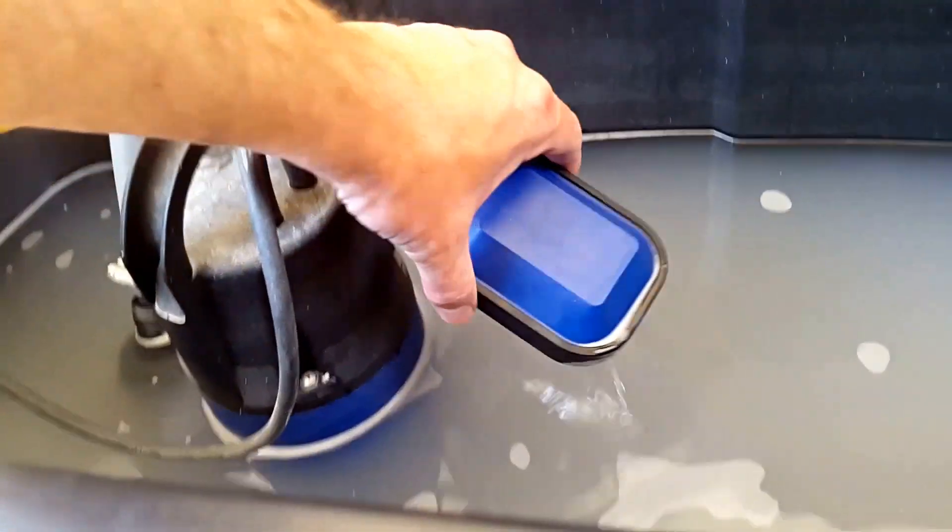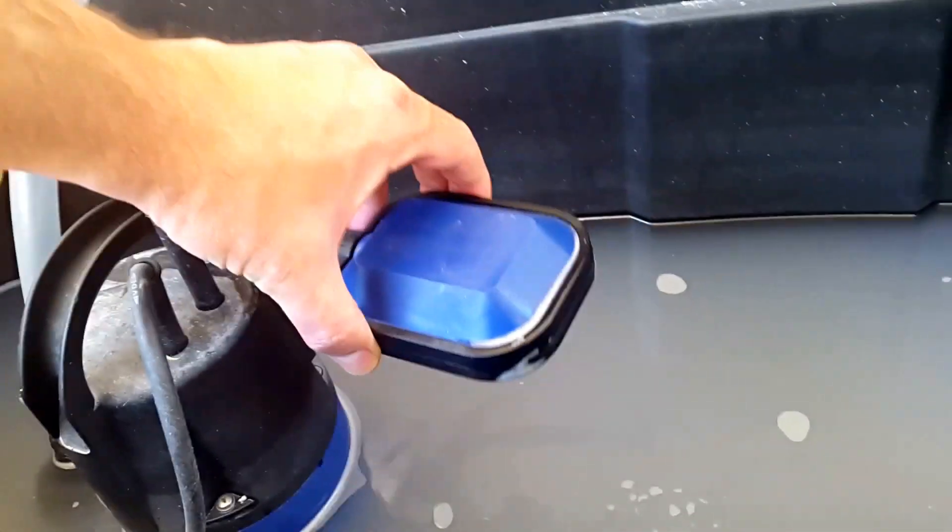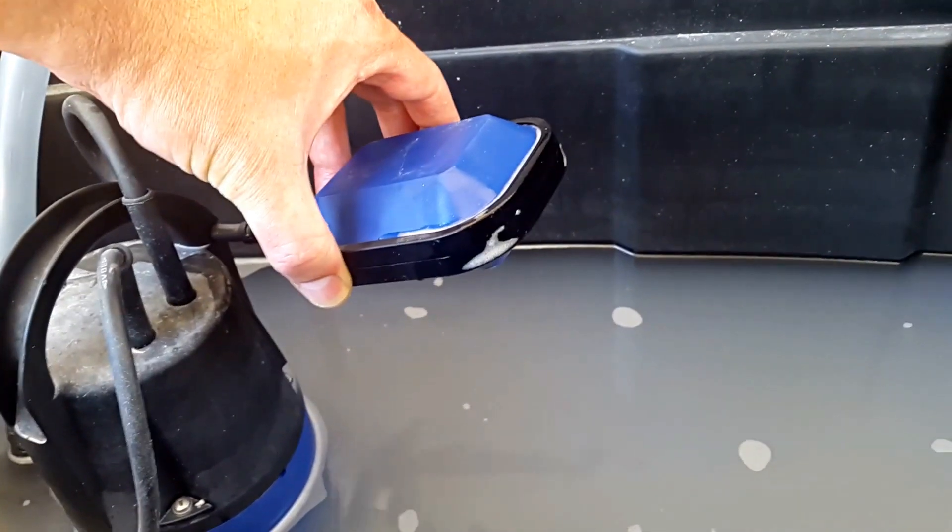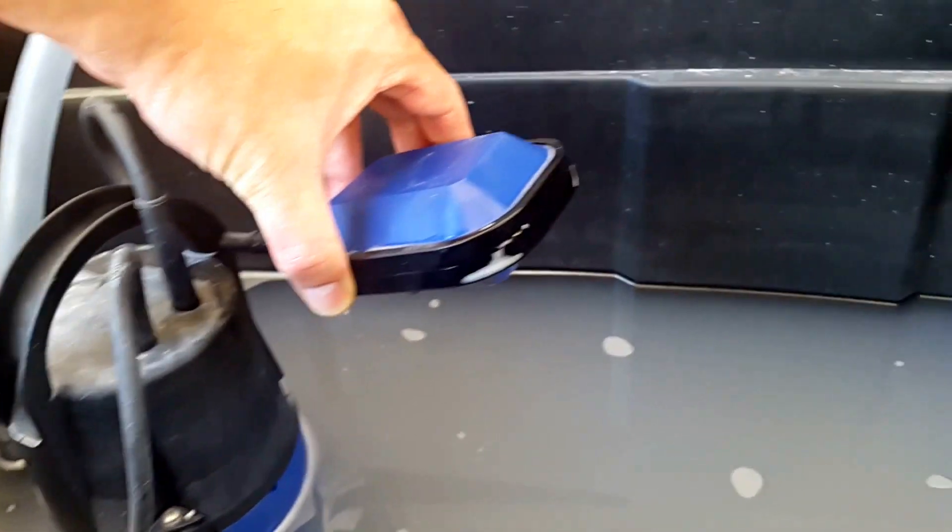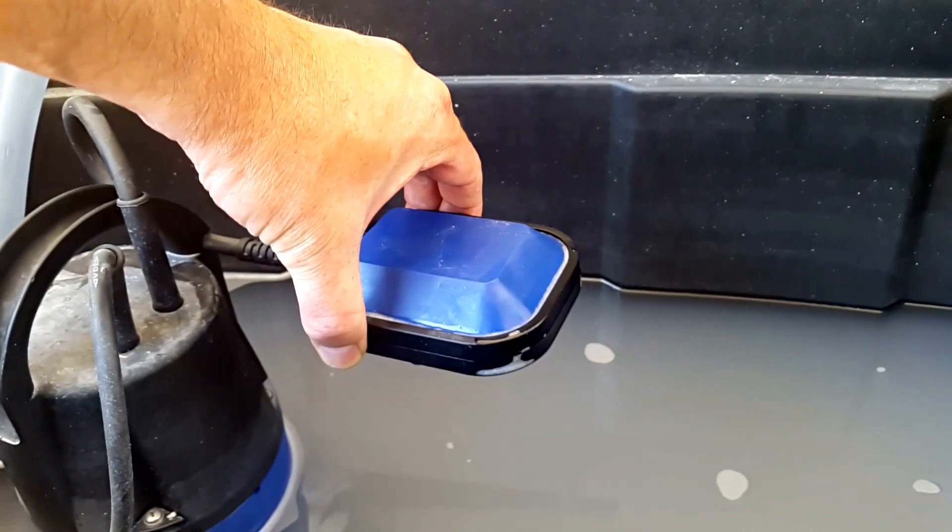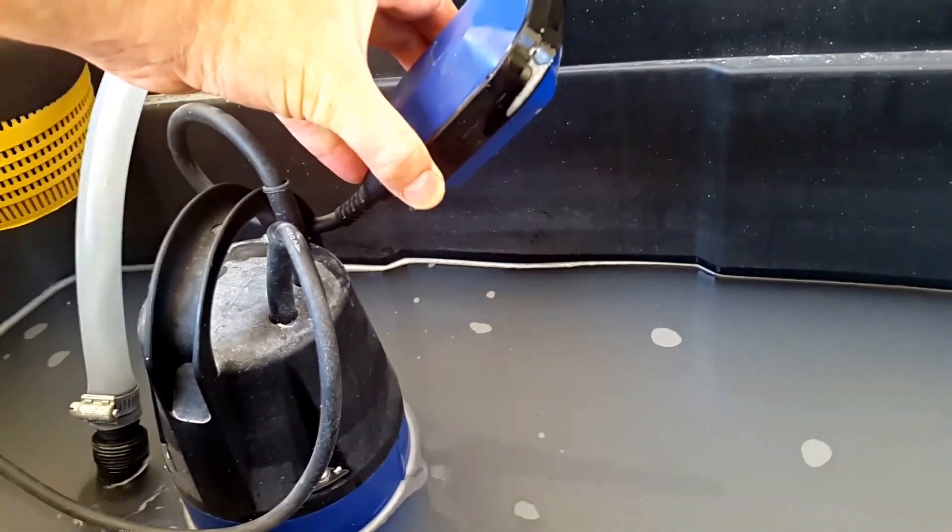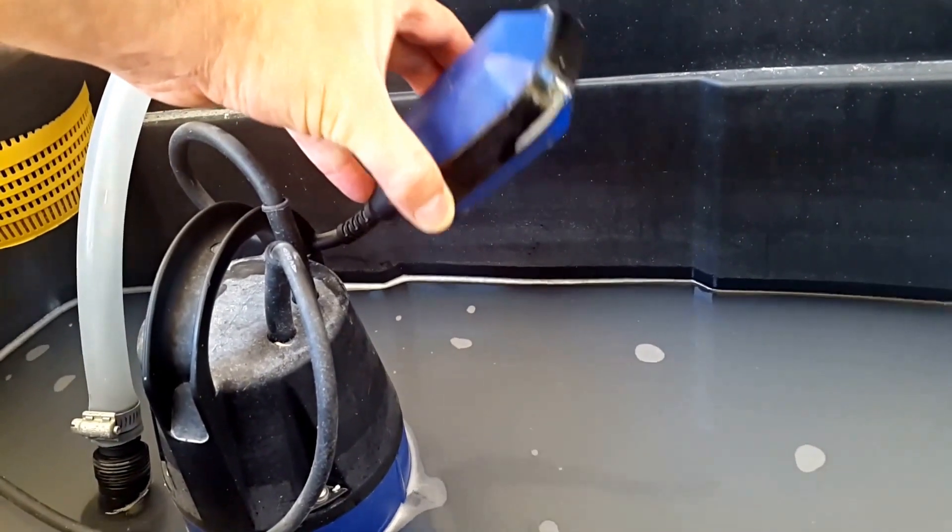Basically how this works: this is the float switch, and as the water rises, this floats on top of the water. As it lifts past 180 degrees to a flat level, there's a switch that switches on the pump inside